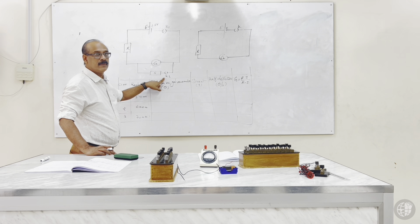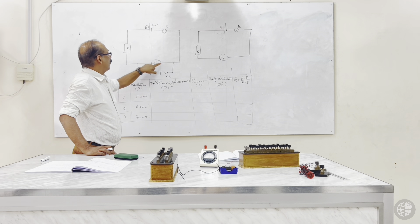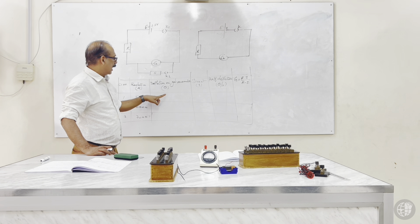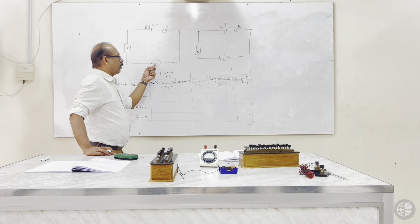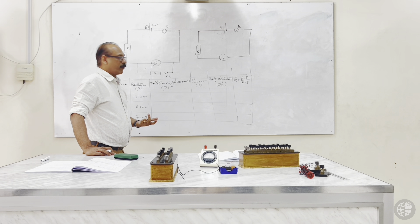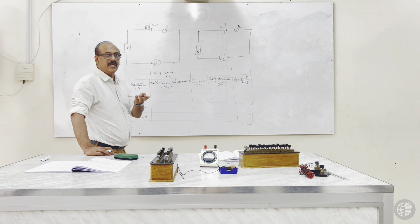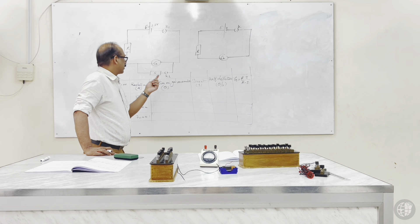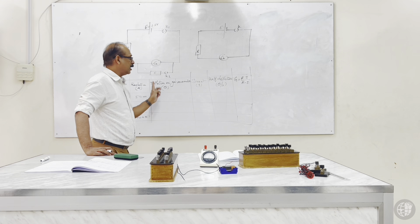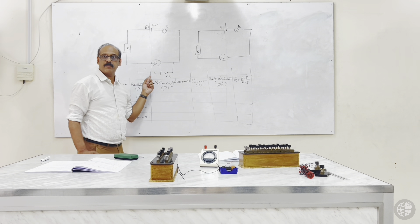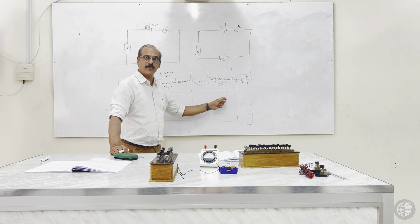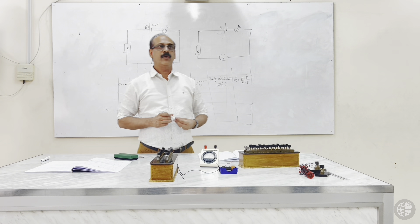Suppose the galvanometer deflection is 18 divisions. Now choose a shunt resistance in the range of 50 to 100 ohms. Close key K2 — the shunt is now in parallel with the galvanometer. Adjust the shunt value until the deflection becomes exactly half. If the initial deflection was 16, bring it to 8. Once half-deflection is achieved, record the shunt resistance S and use the formula to calculate galvanometer resistance G.